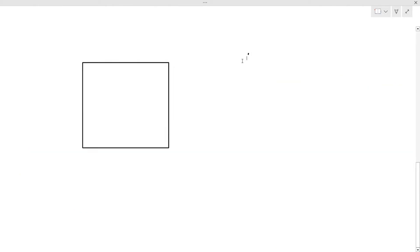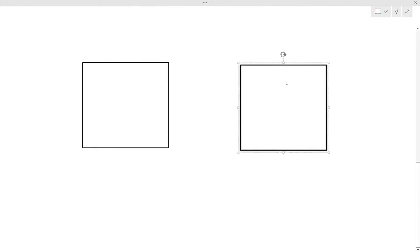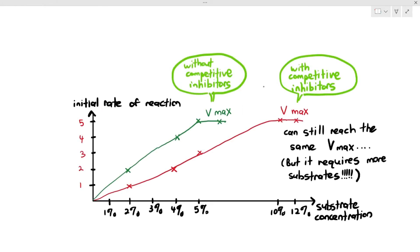The next question is: will increasing the substrate concentration affect non-competitive inhibitors? If you remember from the previous video, when you increase substrate concentration, the effect of competitive inhibitors is reduced because the competitive inhibitors and substrates are fighting for the same site. Will the same effect happen with non-competitive inhibitors? Let's take a look.